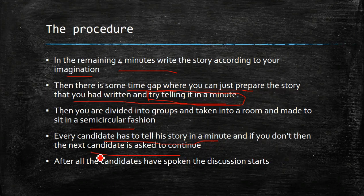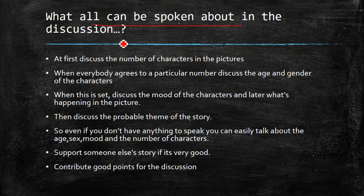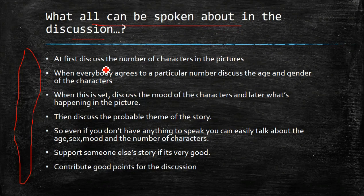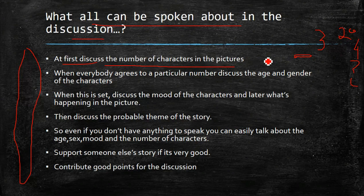Every candidate has to tell the story in a minute; if you don't finish, the next candidate is asked to continue. After all the candidates have spoken, the group discussion starts. Everyone asks me: what should we speak in the discussion? In every group discussion, the same structure follows — first, everybody discusses the number of characters in the story. Some might say two, some three, some four, since the picture is hazy. So first you decide the number of characters.